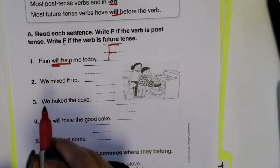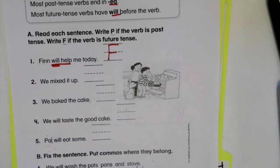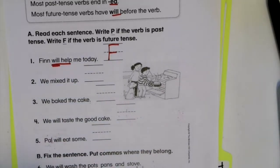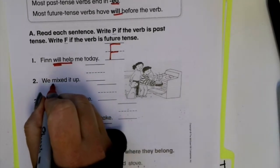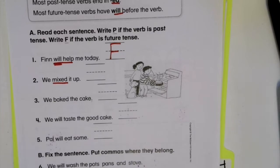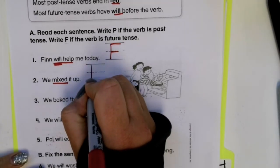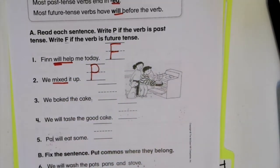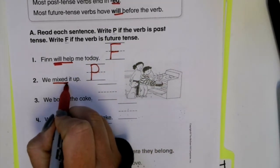Number two, we mixed it up. Who is the sentence talking about? We. What did we do? We mixed. That's a verb. Shows action, doesn't it? Mixed. Is that past tense or future tense? Put your letter down. Yes, you should have a P for past tense. It has that ed ending.